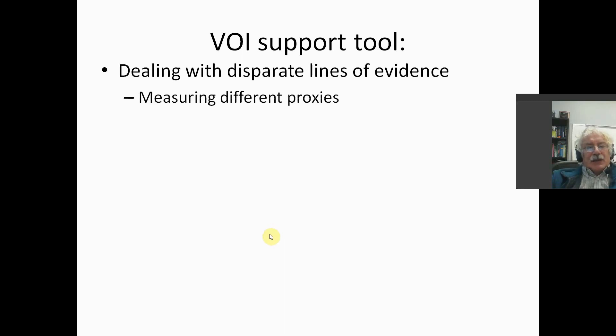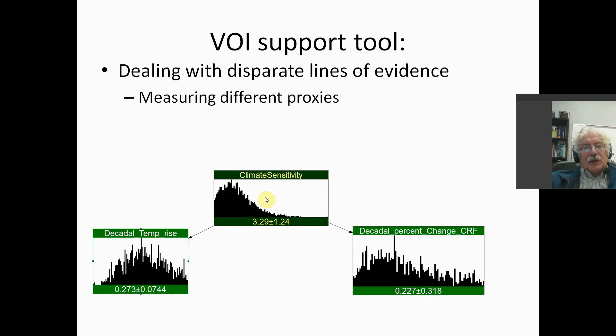Disparate lines of evidence frequently arise when we are measuring different proxy variables for the same variable of interest. In the current case, the variable of interest is equilibrium climate sensitivity. It has a distribution given by this histogram, the Roe-Baker distribution as mandated by the U.S. Social Cost of Carbon Computing Platform.